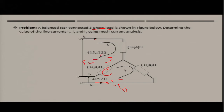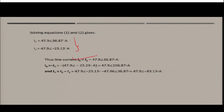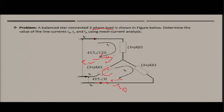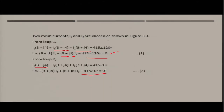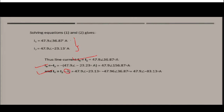To summarize: IR equals i1, IB equals minus i2, and IY equals i2 minus i1. The sign convention is based on the assumed clockwise positive direction — i1 is clockwise and i2 is also clockwise but in the opposite direction for the shared branch, hence the minus sign.